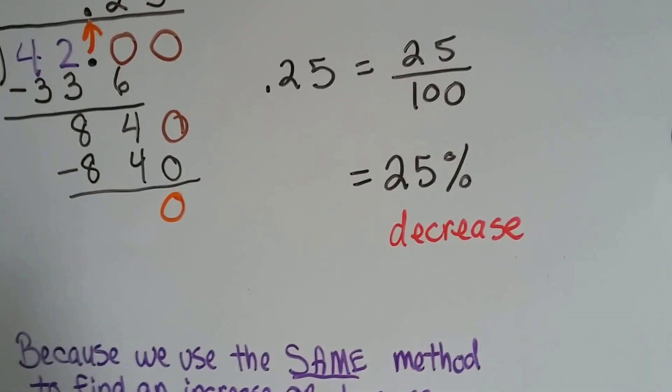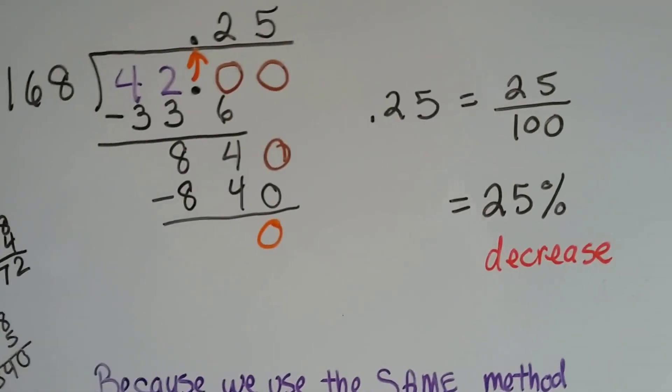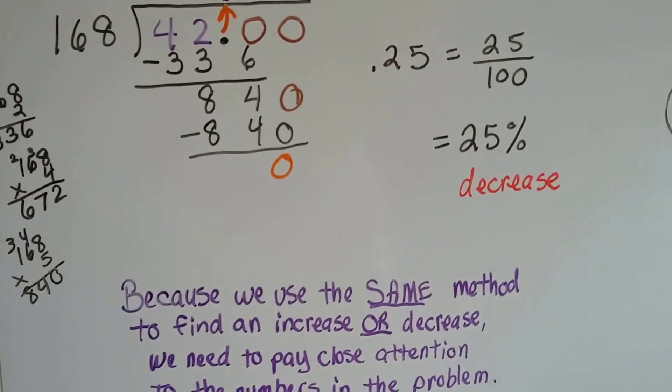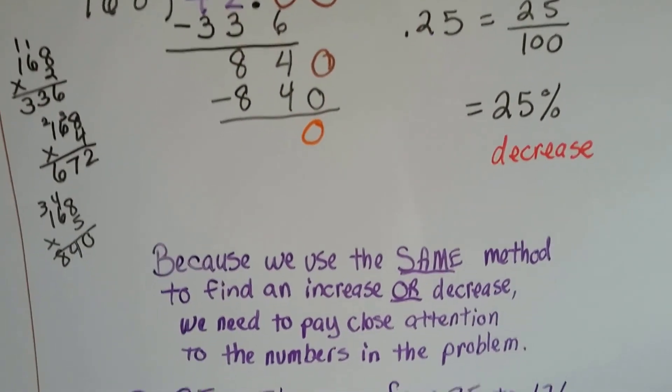Or 25% decrease. So maybe it was a dress, and it got marked off 25% on the sale rack, and now it's only $126.